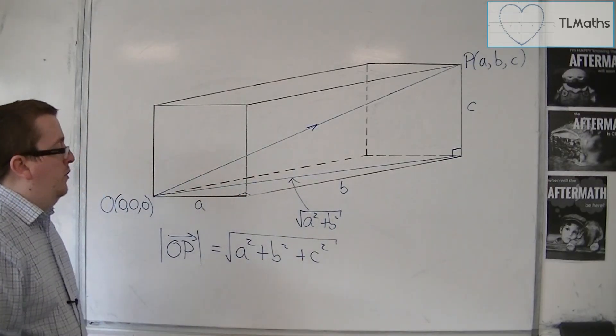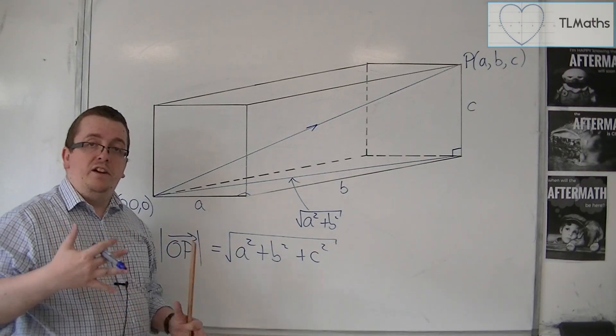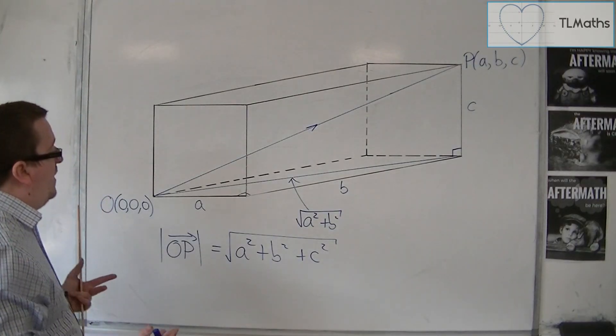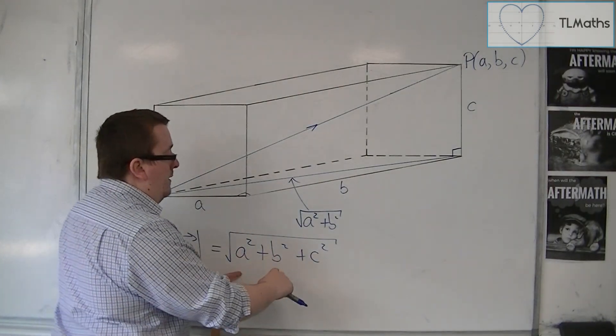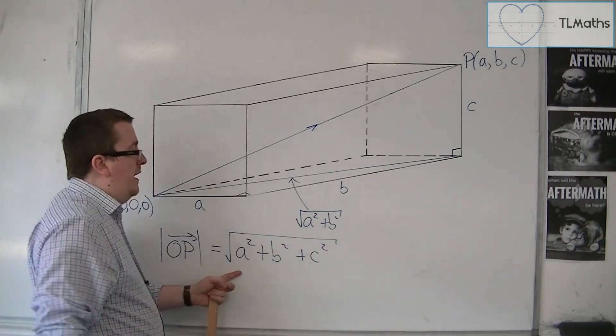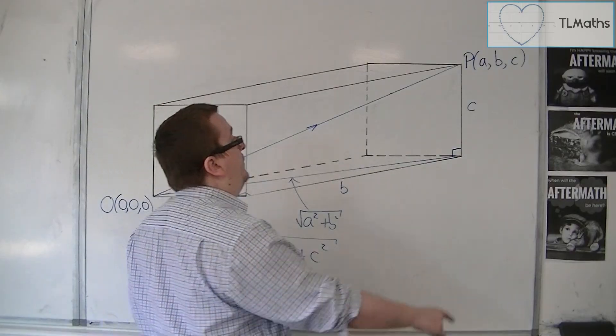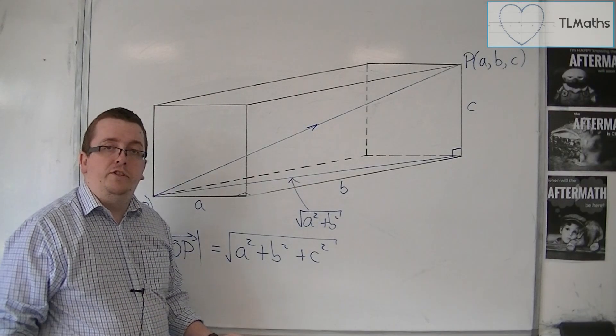This is extending Pythagoras into three dimensions. If you want to find the length of a vector, you just need to square each of the components—the A, the B, and the C—add them all up, and then square root. That is how you can find the length of a vector.